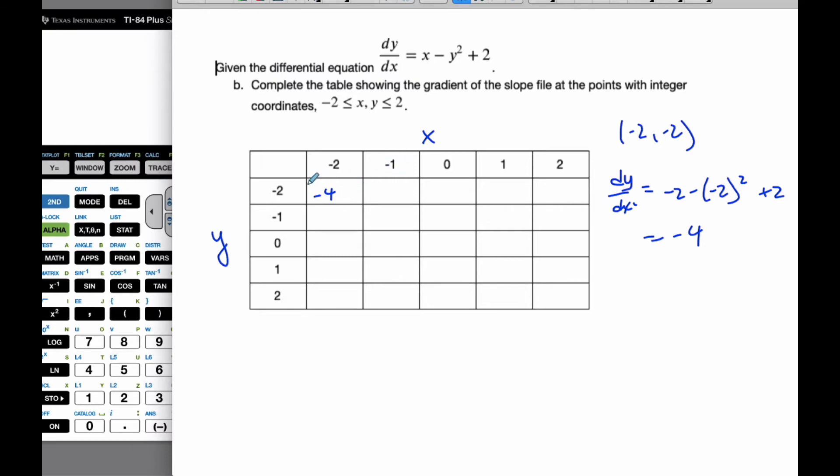I go to the next point where x is negative 1 and y is negative 2. Going to this particular cell here. Substitute it into dy dx. And I can see that my x is negative 1 minus negative 2 squared plus 2. Gives me, well, that's going to be 1 minus 4, which is equal to negative 3. And this will end up being negative 3. And I go through each point individually. And you'll start to see some of the patterns that emerge.